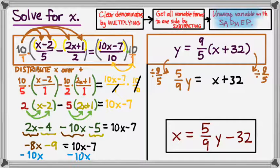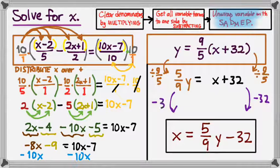And so the final step to get the x by itself is to subtract 32 from both sides, which is where we get x equals 5 ninths y minus 32.